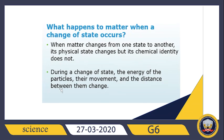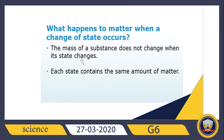Only the energy of the particles, their movement, and the distance between particles will change. Their chemical identity will not change, and the mass of the substance will not change. Each state contains the same amount of matter — the amount of matter in three ice cubes equals the mass of the liquid water that forms after those three ice cubes melt.